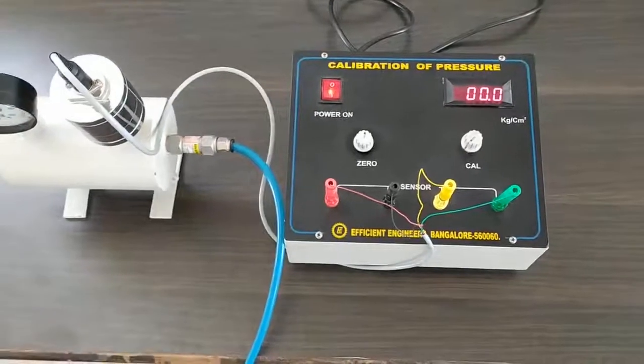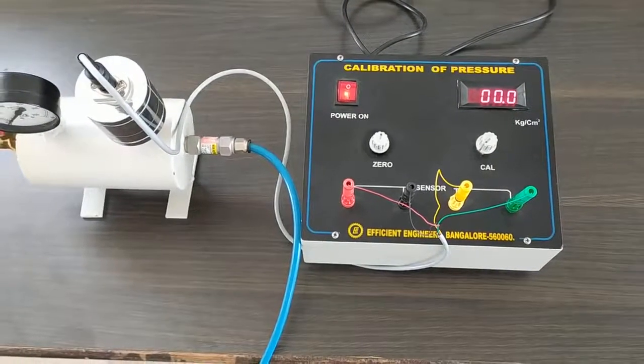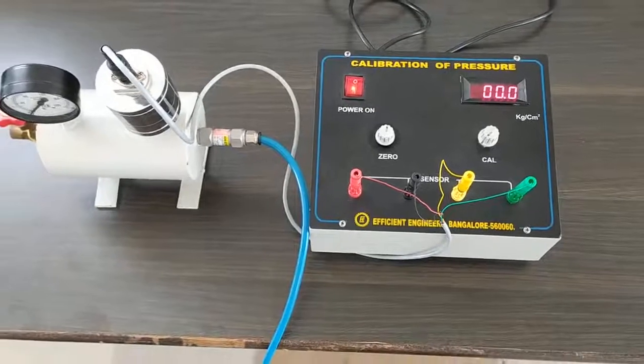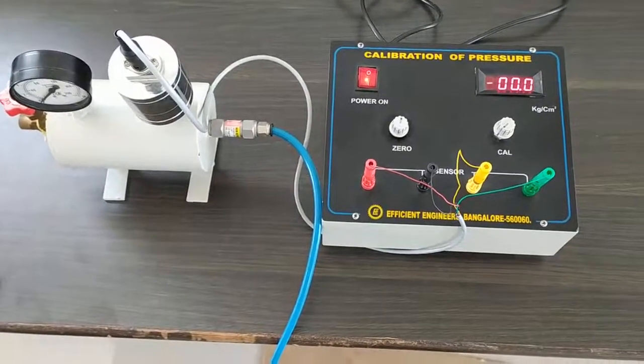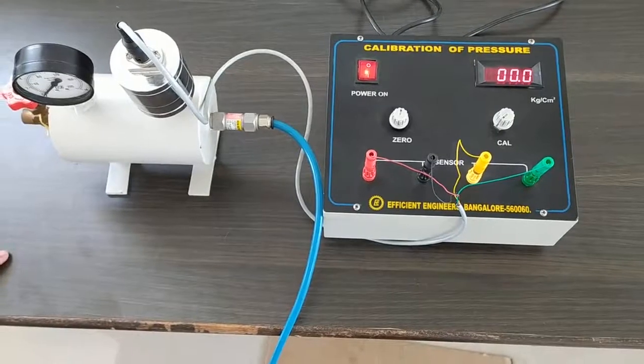The instrument shows the calibration of the pressure cell. In order to calibrate the pressure cell, we need these operators. The aim of the experiment is to calibrate the given pressure cell.